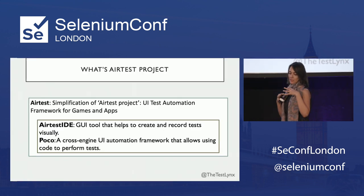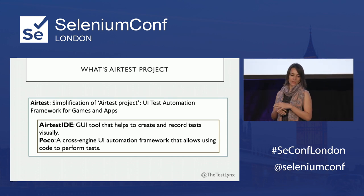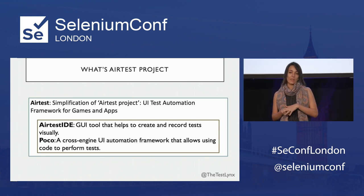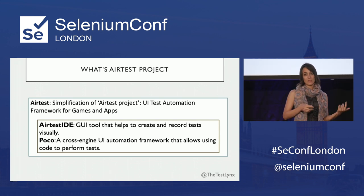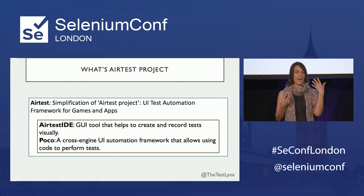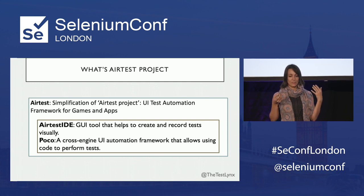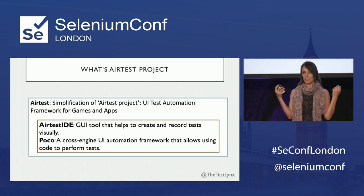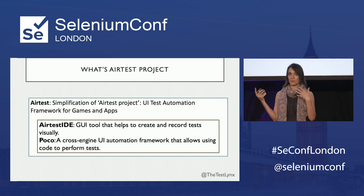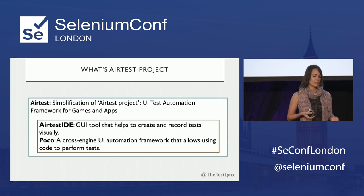What's Airtest Project? Airtest Project is an open source cross-platform tool developed by a giant company in China called NetEase, in their games department. The thought was that testing games is really, really hard — it's one of the hardest applications to test. So they needed a solution to automate games as well, to save on manual cost. And this solution doesn't work only for games — it's cross-platform.